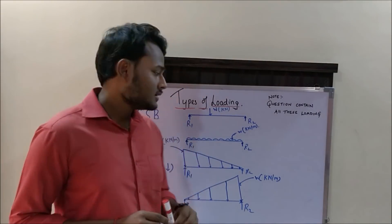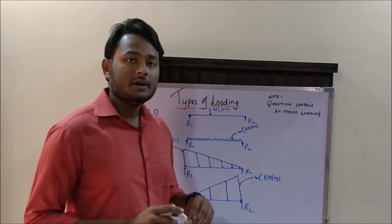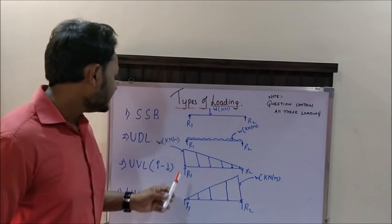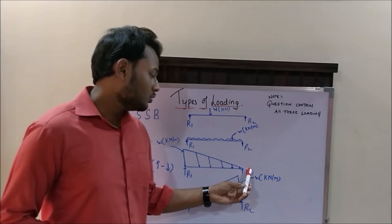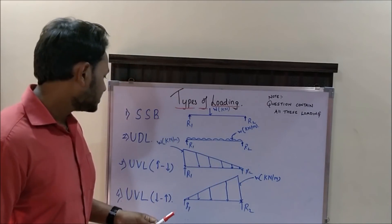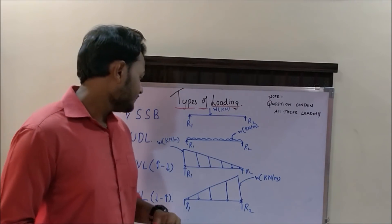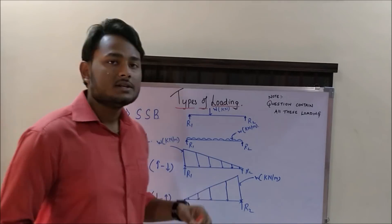The third one is the uniformly varying load in which the load intensity varies throughout the beam. There are two types: the first one in which the load intensity decreases from a certain value to zero, and the second one in which the load intensity increases from zero to a certain value.